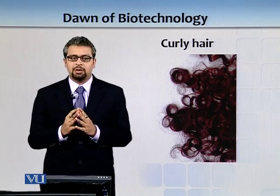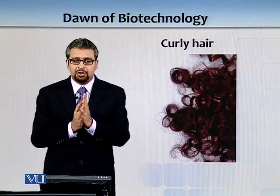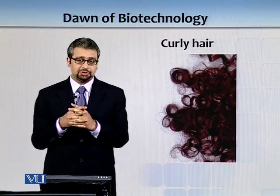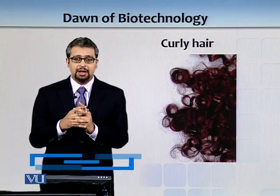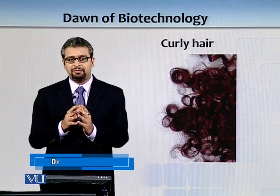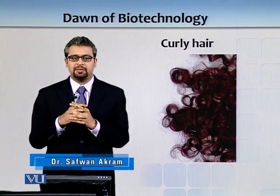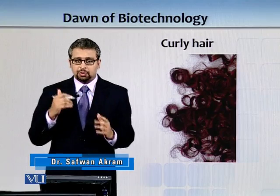If they have flattened or C-shaped follicles, they usually get curly hair, and if they have oval hair follicles, they get wavy hair.